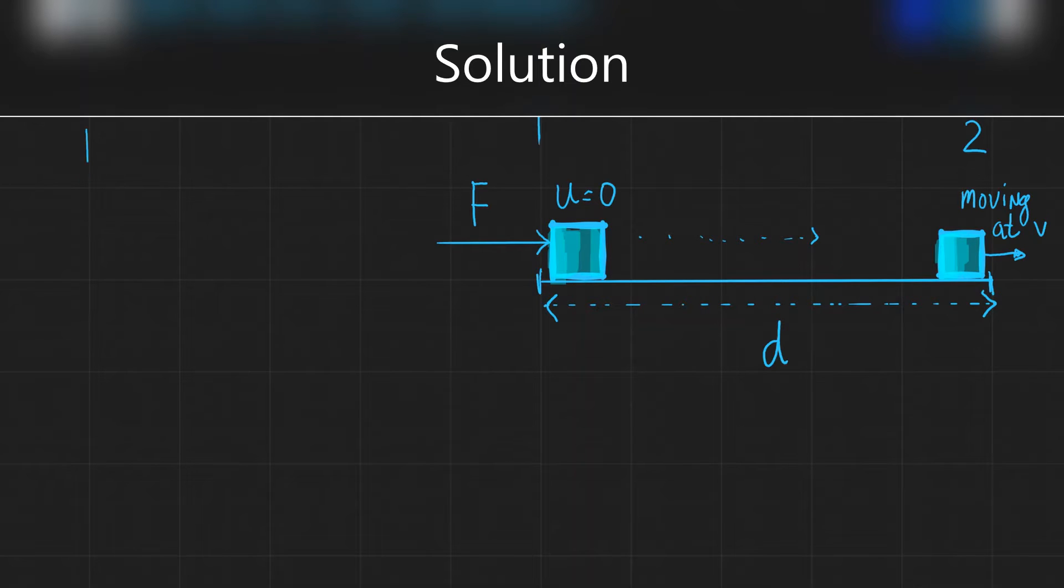First of all, the kinetic energy will be equal to the amount of work done that has been done onto this object. So the kinetic energy will be equal to the work done. The work done in general is equal to the force multiplied by the displacement or the distance in the direction of the force.